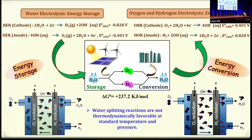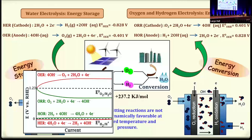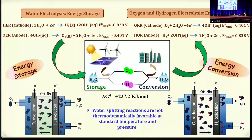In the presence of base, water splitting produces hydrogen as well as oxygen. Conversion of H2O to oxygen and H2 — that is the oxygen evolution reaction and hydrogen evolution reaction. You can see that energy storage is possible because H2O and O2 can again undergo the oxygen reduction reaction and H2 oxidation reaction to produce H2O. You have to supply energy from external resources to produce this, whereas when you do the oxygen reduction reaction and hydrogen oxidation reaction, you get the energy back — that is energy conversion.